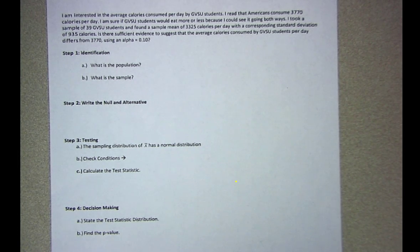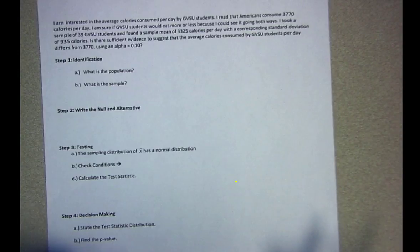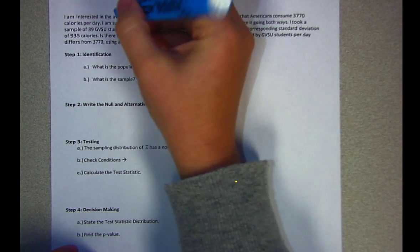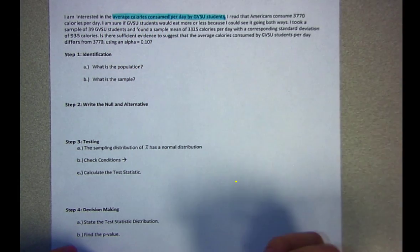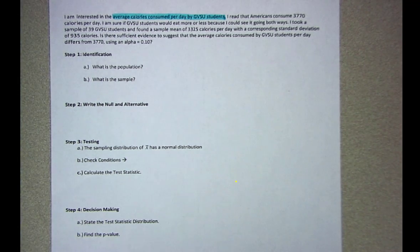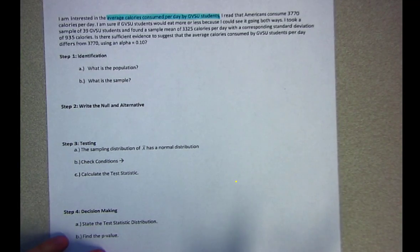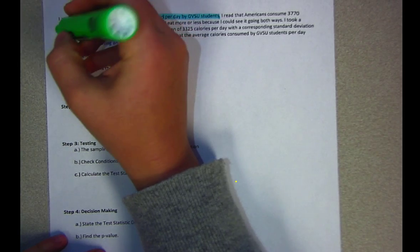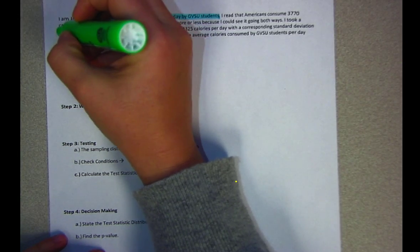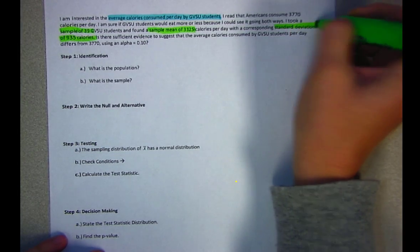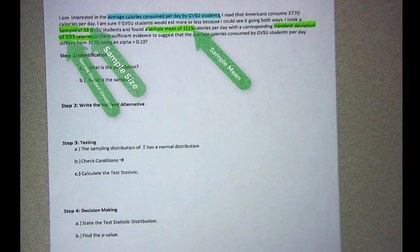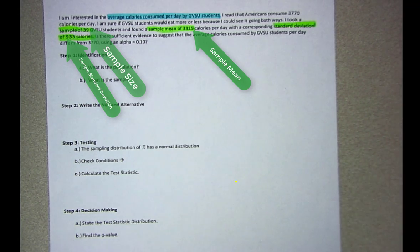When I read this paragraph it looks like I'm interested in average calories consumed per day by GVSU students. Our variable of interest is calories consumed and our population is GVSU students. That's going to help me write my parameter definition. The next thing I see is my sample information. When you look at these paragraphs, if you don't have raw data you need to know sample size, sample mean, and standard deviation.